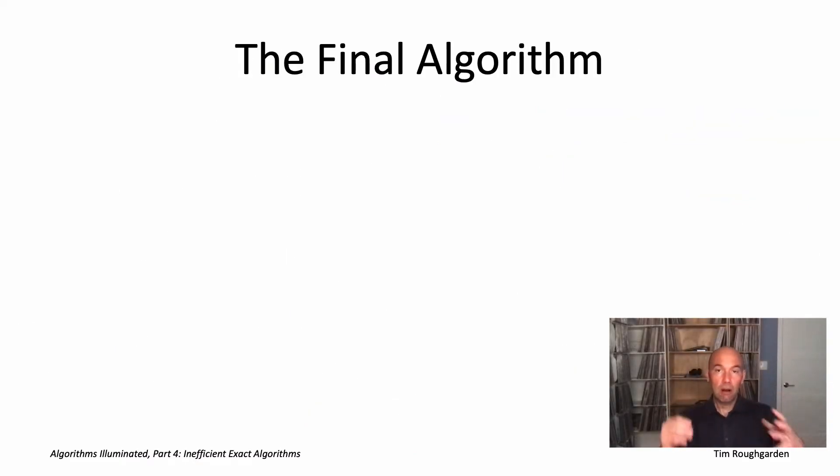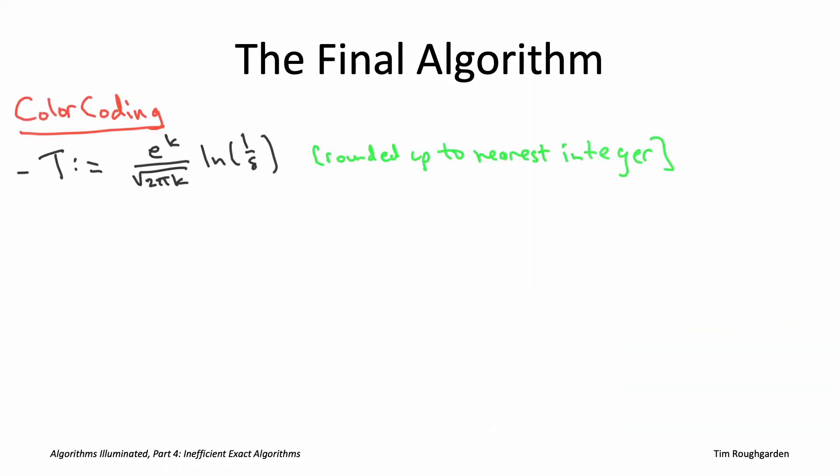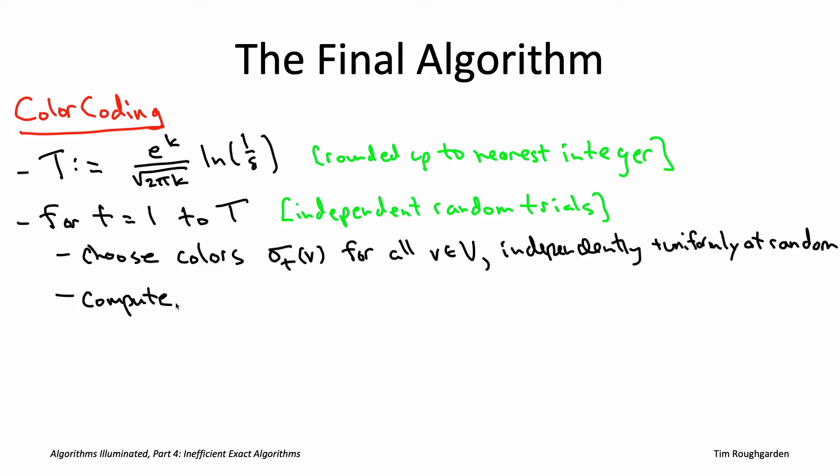So just to make sure that it's clear how all the ingredients fit together, let me go ahead and show you the pseudocode. The first thing the algorithm does is compute how many random trials it needs, and that's what we just figured out on the previous slide. So it's going to be e to the k divided by root 2 pi k times log 1 over delta, where delta is this user-supplied failure probability. Now we're just going to run capital T independent random trials. Each trial we pick a fresh, new, uniformly random coloring. Each trial we invoke our panchromatic path subroutine to find the minimum cost panchromatic path for that particular coloring. And then we just remember the best path that we ever see over all of the trials.